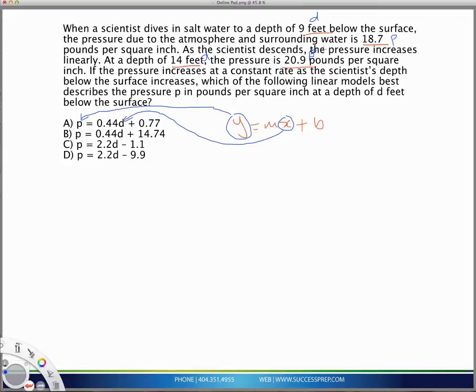So, it works out such that if you plug in the d at 9, you should expect to get, here in the equation, you should expect to get a p that's 18.7. So, let's try that out. So, what I'm going to do is pretty much plug in these values into these equations, and whichever equation gives me the two numbers that go together is the correct one.